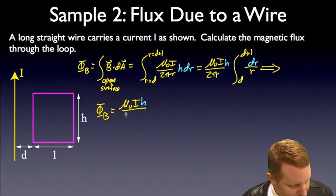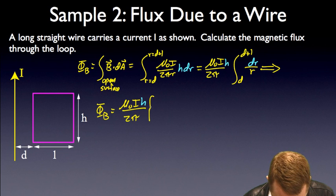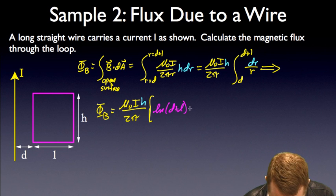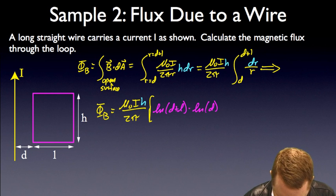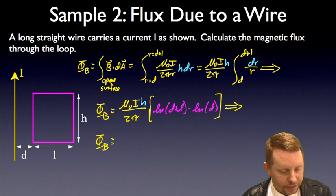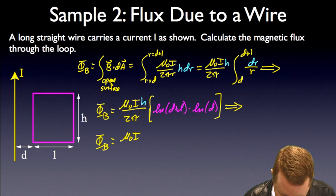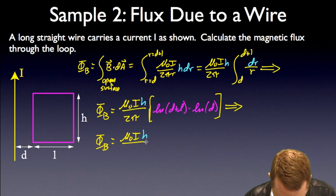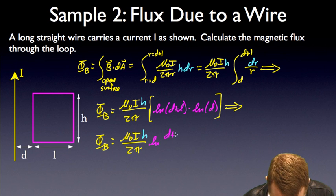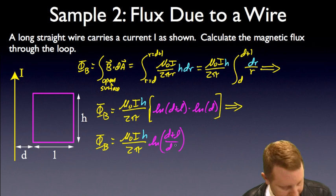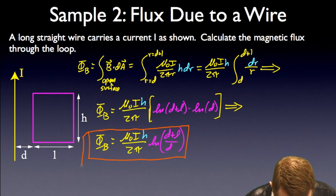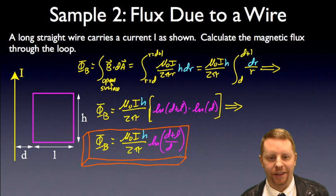So I could write this then as our total magnetic flux φ_B is equal to μ₀I times h divided by 2π times the natural log of d plus L minus the natural log of d, which implies then that the total magnetic flux φ_B must be equal to μ₀I h divided by 2π, and the log of d plus L minus the log of d, well that's just the log of d plus L divided by d. So there's our answer. Total magnetic flux is μ₀Ih divided by 2π times the natural log of d plus L divided by d.